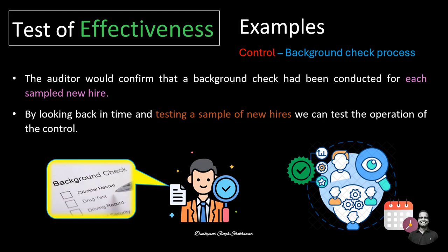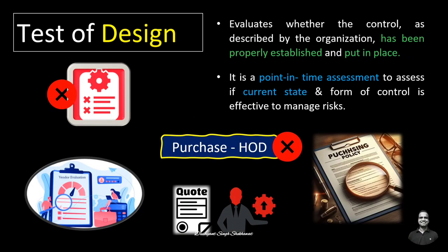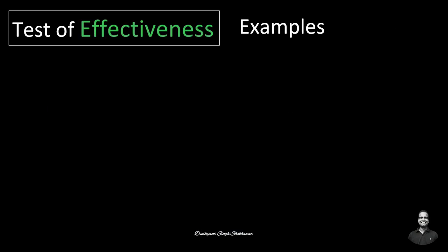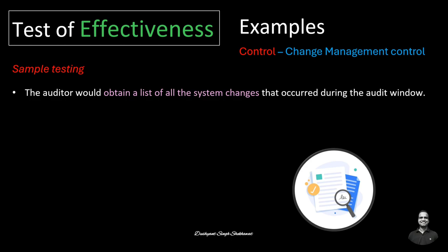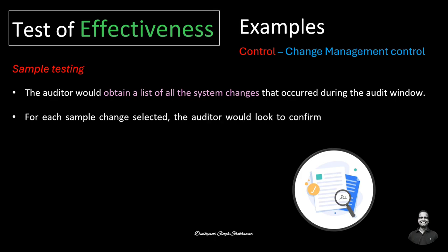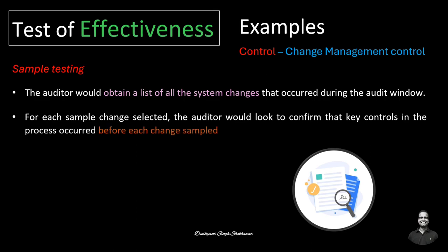In the test of design, we checked only one hire at a point in time. For a similar change management example, to test operating effectiveness we again do sample testing. The auditor would obtain a population — a list of all system changes during the audit window — then select a sample of changes. For each sample change, the auditor confirms that all key controls are present: peer review, testing, and approval of all changes.